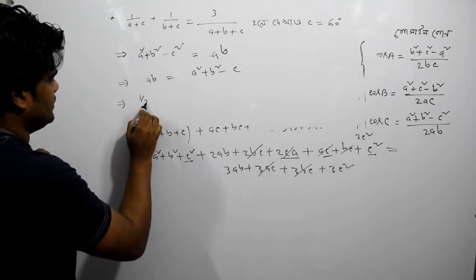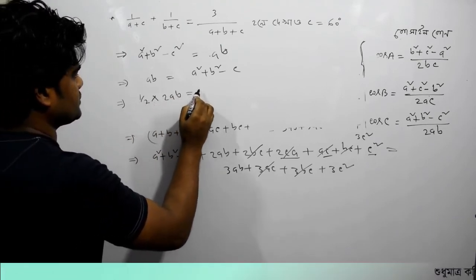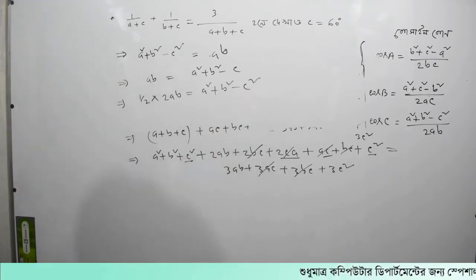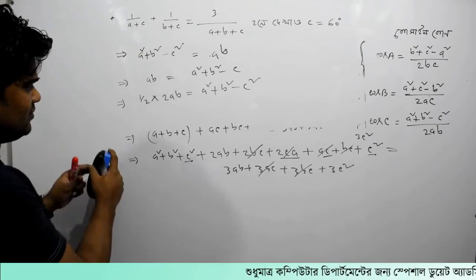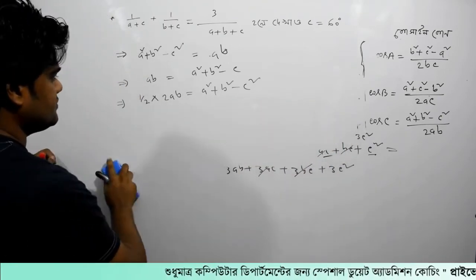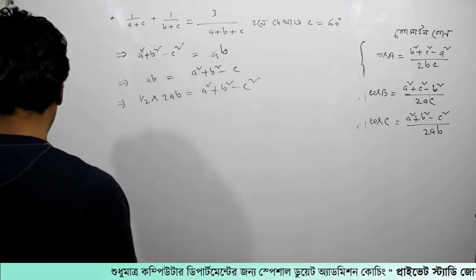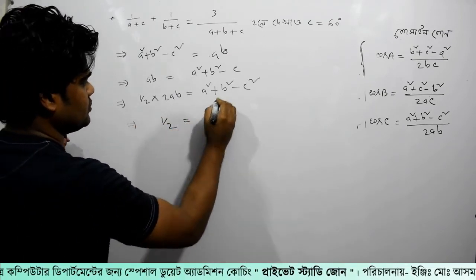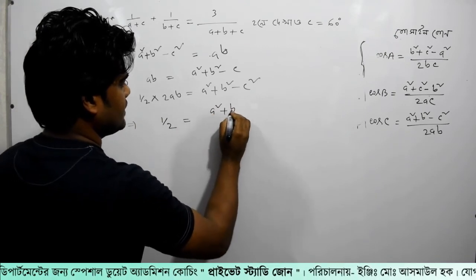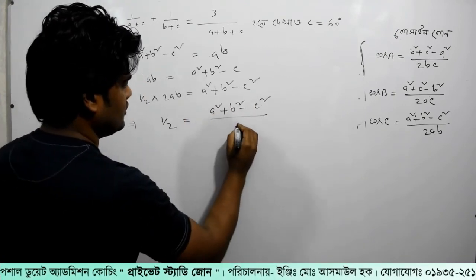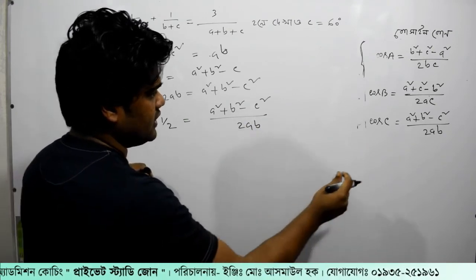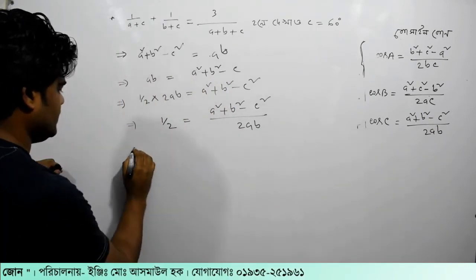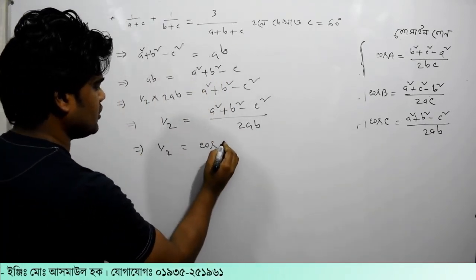1.5 x 2ab. How do we do this? a² plus b² minus c². So, how do we do this? a² plus b² minus c² divided by 2ab. Let's see. a² plus b² minus c² divided by 2ab. It's equal to cos c. So, we have 1⁄2 equal to cos c.